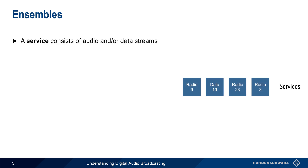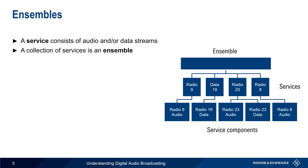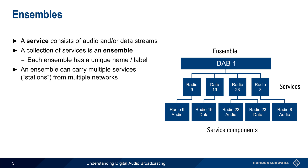In DAB, a service is analogous to a station in traditional analog broadcasting. Each service is composed of one or more service components, which are audio or data streams. A collection of services is called an ensemble, which has a unique name or label. This ensemble can carry multiple services or stations from multiple networks. Our illustration here shows only four, but a typical ensemble carries 9 to 12 services or more.